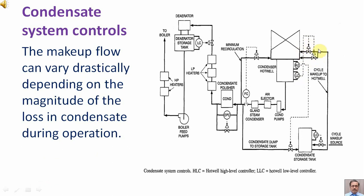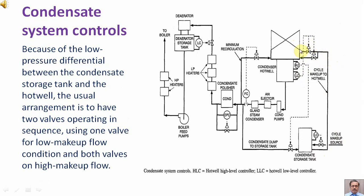The make-up flow can vary drastically depending on the magnitude of the loss in condensate during operation. Because of the low pressure differential between the condensate storage tank and the hot well, the usual arrangement is to have two valves operating in sequence — using one valve for low make-up flow conditions and both valves for high make-up flow.